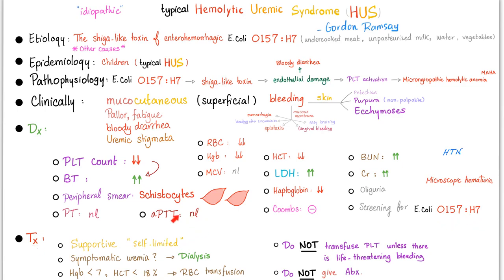Treatment for HUS is supportive — it is a self-limited disease. Remember this: TTP is an emergency, but HUS is self-limited. For symptomatic uremia, go with dialysis. If there is anemia, give RBC transfusion. Do not give platelets. Do not give antibiotics. These are two very common mistakes on the exam.